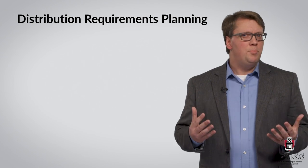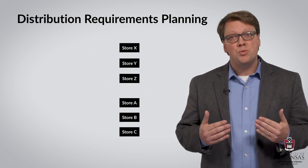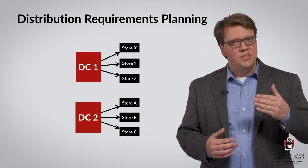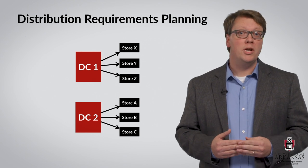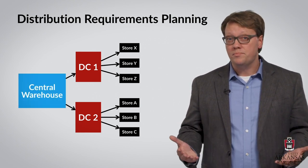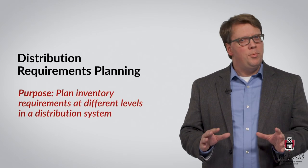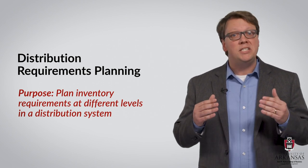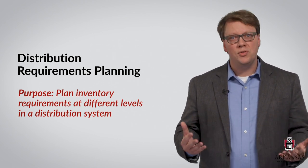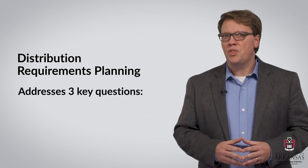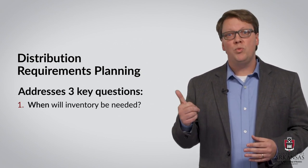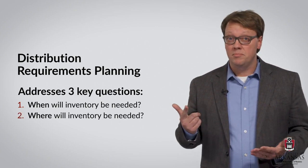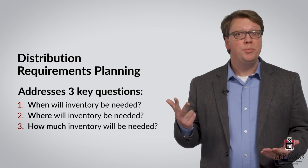So, in DRP, demand at the store level drives inventory requirements at the Distribution Center level, and this in turn determines when and how much product is needed at the central warehouse. The purpose of Distribution Requirements Planning is to plan inventory requirements at different levels in a distribution system. It specifically addresses three key questions: first, when will inventory be needed? Second, where will inventory be needed? And third, how much inventory will be needed?